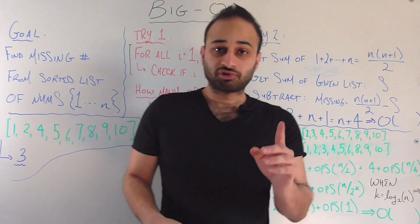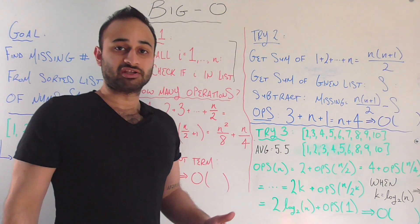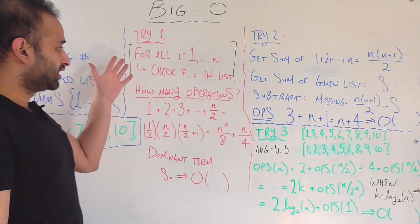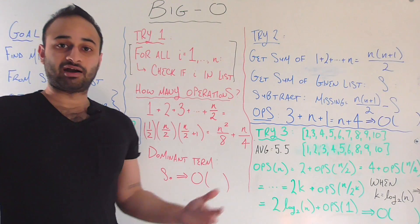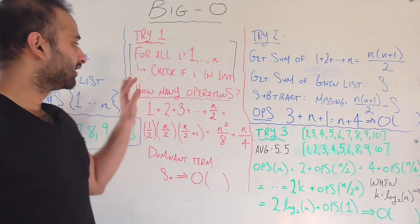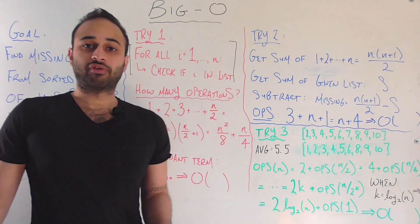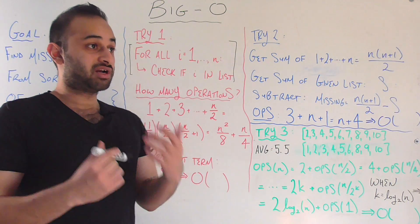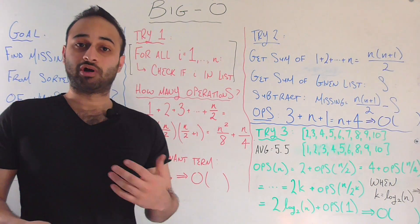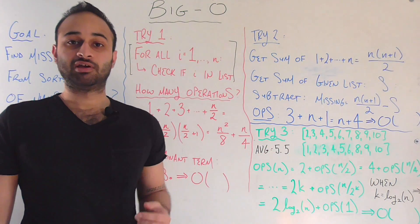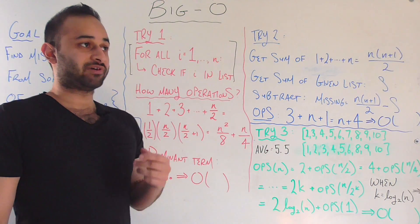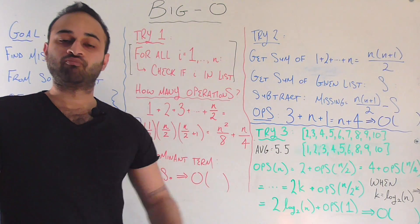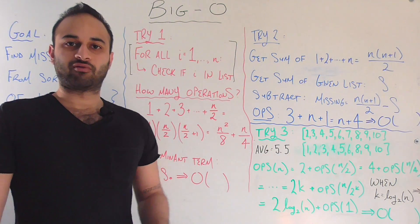The most naive or most trivial way people might solve this is try number one. It's very simple — the entire algorithm or pseudocode fits inside two lines. We know that the numbers go between one and n, so for every number between one and n, we go check if it's in the list. Once we find the number that's not in the list, that is the missing number. Pretty obvious, pretty straightforward.